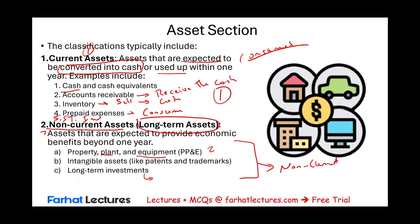Under the asset section, you will see current assets and non-current assets. Under non-current, there are a few subcategories: under property, plant and equipment you list those assets; under intangible assets you list several assets; and under long-term investments you could list investments in stocks, investments in bonds, long-term notes receivable, and so forth.